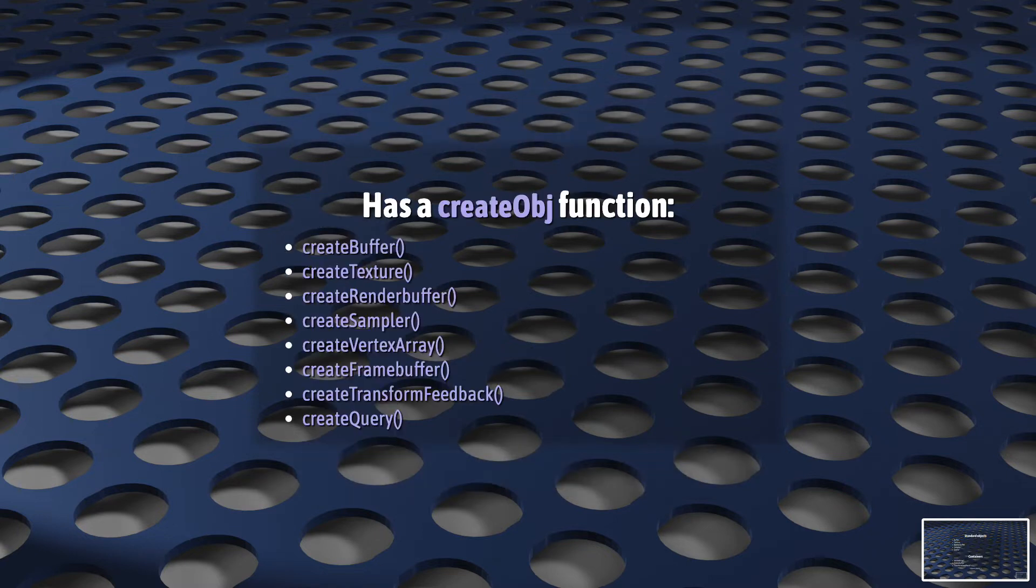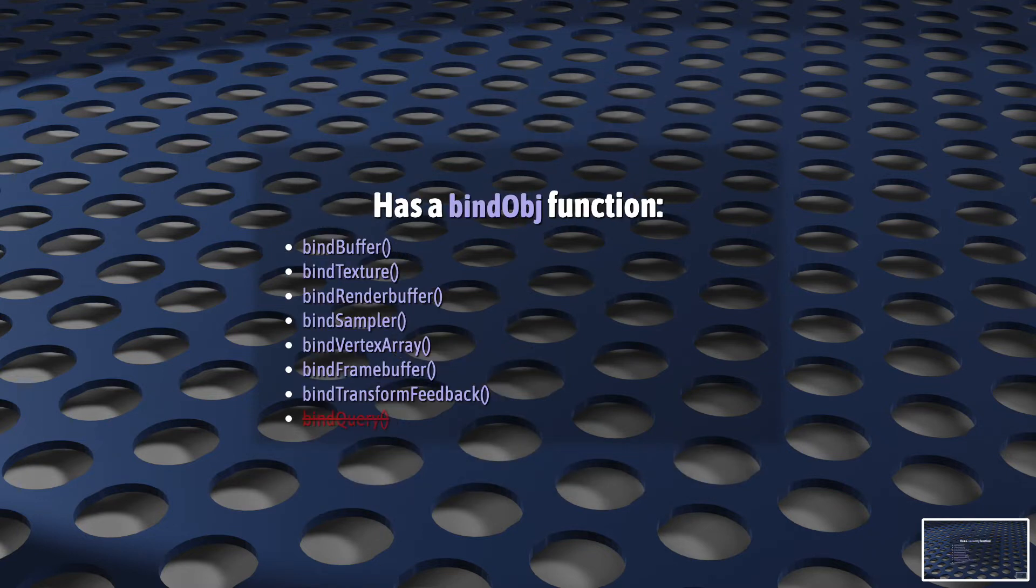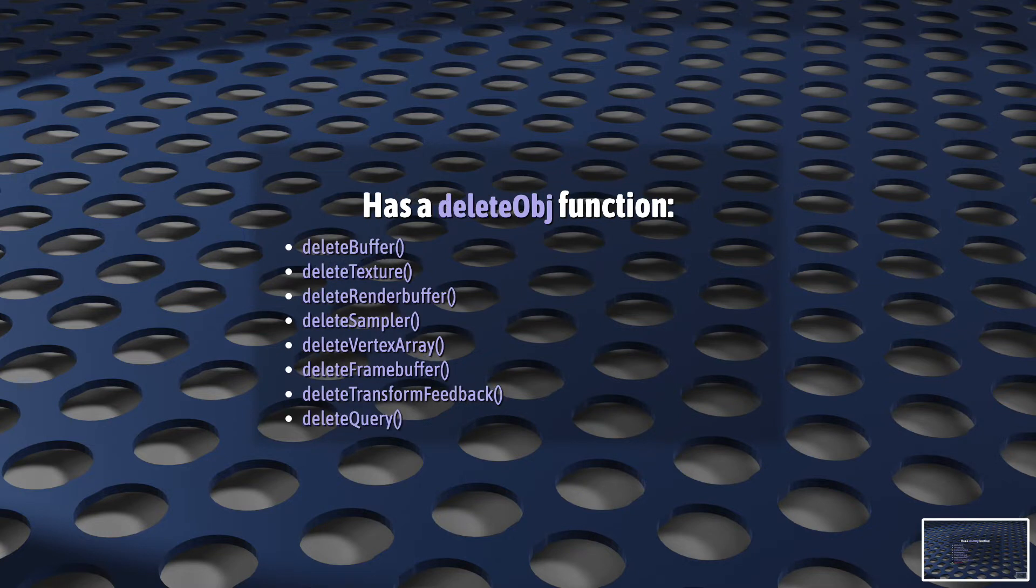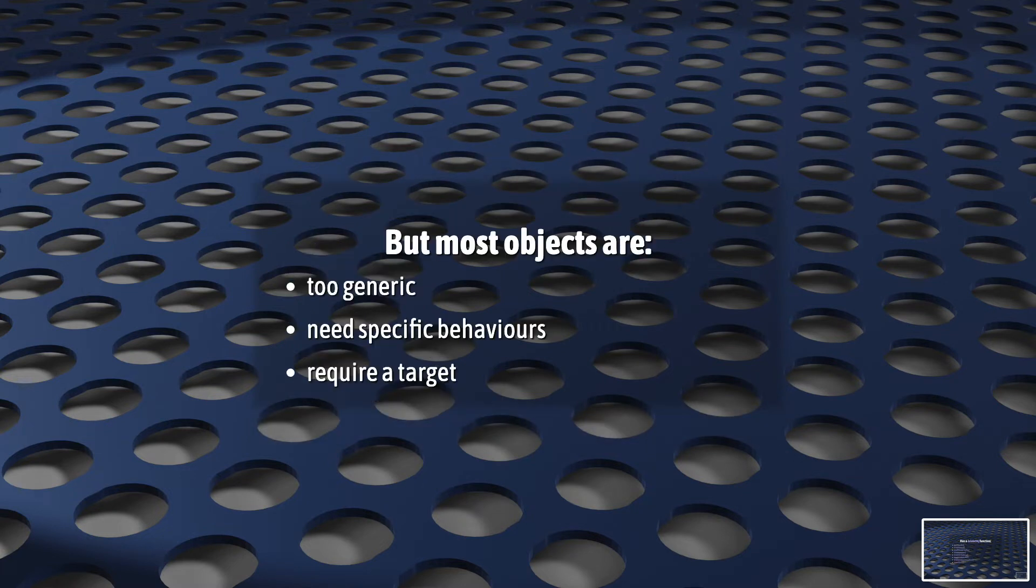It's pretty easy to tell when you've encountered an object. They're almost always created using a create function, bound to a target using a bind function, and destroyed using a delete function. Simple objects are usually too generic to be useful to us, so to get specific behavior from an object, we want a target.